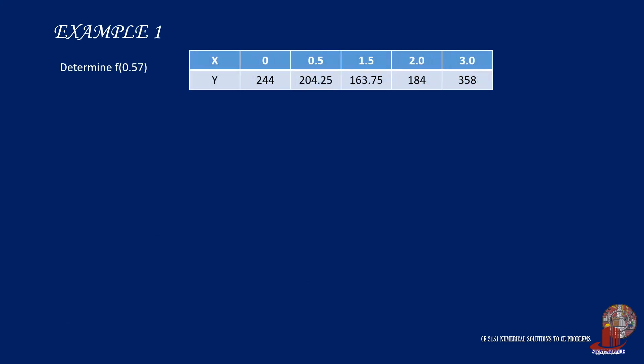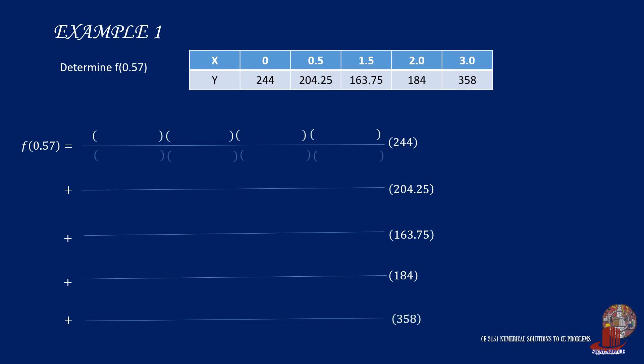For our example, we will be referring back to our previous one from the last video to check if the interpolated value will be the same. Let's determine the function of 0.57 from the data set shown. Having 5 data points, we would be working on 5 terms added together and multiplied by the y values in each term. The first term is multiplied by 244, the second with 204.25, the third with 163.75, the fourth with 184, and the last is multiplied with 358.